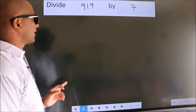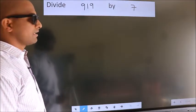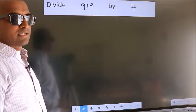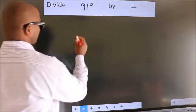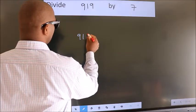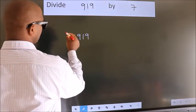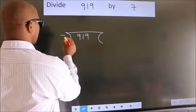Divide 919 by 7. To do this division we should frame it in this way. 919 here, 7 here.